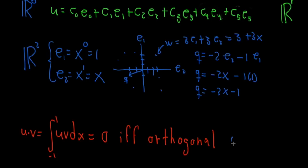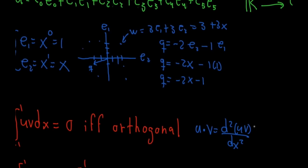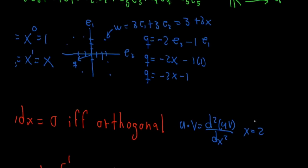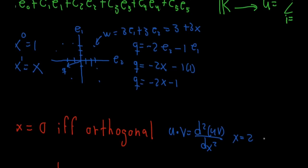You could tell me you don't like that rule — for example, your rule could be that the dot product is the double derivative of u times v over dx squared, where x is equal to 2, and that if this is equal to 0 they are orthogonal. You could make that rule, and then you would have a vector space that follows that rule and has some kind of properties. That is math — you are free to do that.